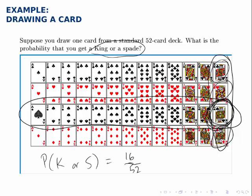Or you can start by adding the 4 kings and then add on all the spades that you haven't already counted and you'll get to 16 as well.